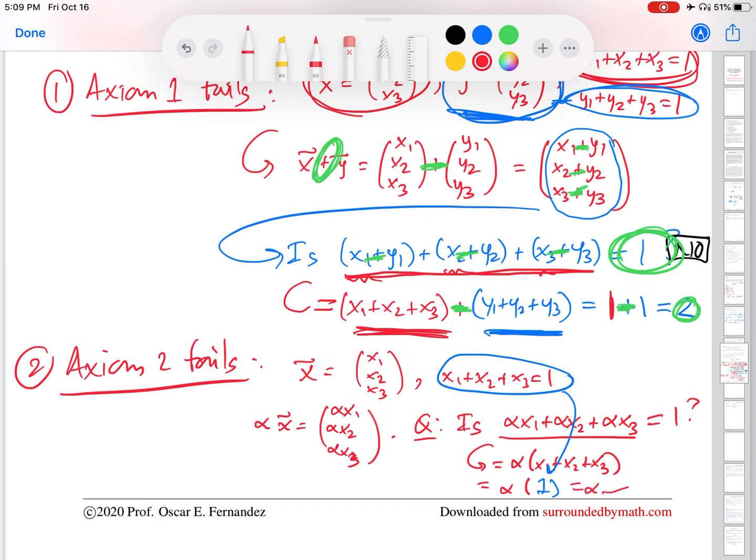Now, if alpha equals one, then yes, this axiom is satisfied. For every other, literally every other alpha value, the axiom fails. But in the vector space axioms, axiom two does not say, let alpha be equal to one, and then verify the axiom. It says let alpha be any real number. So in this case, we can see that that's not going to work. So axiom two fails.